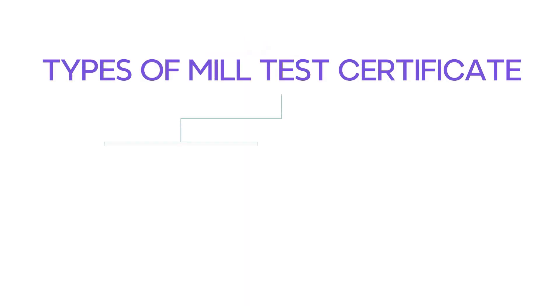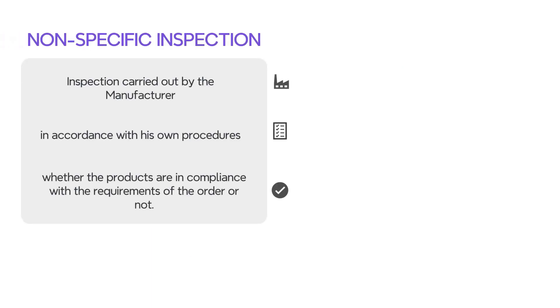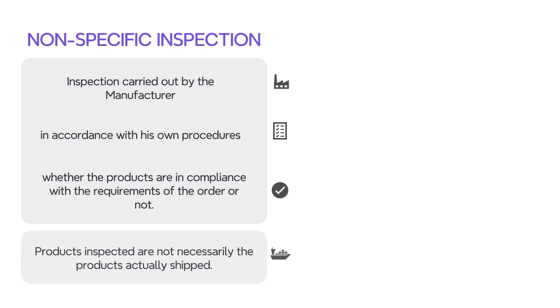There are mainly two types of MTC: non-specific inspection and specific inspection. Non-specific inspection is an inspection carried out by the manufacturer in accordance with his own procedures, whether the products are in compliance with the requirements of the order or not. Products inspected are not necessarily the products actually shipped.